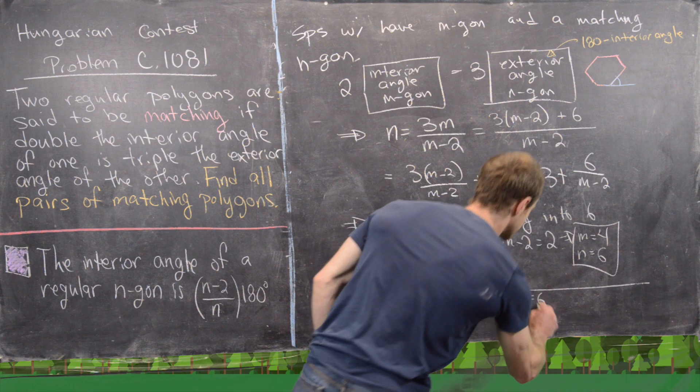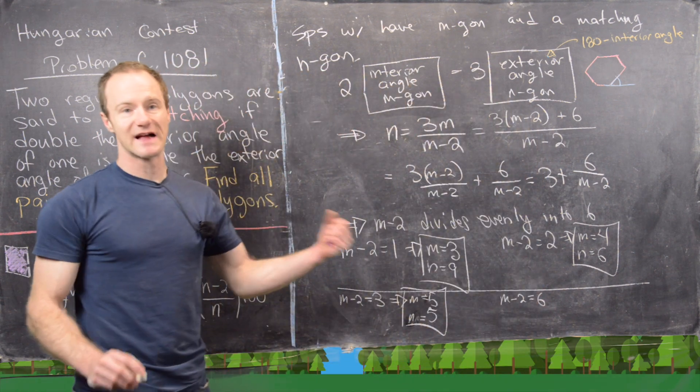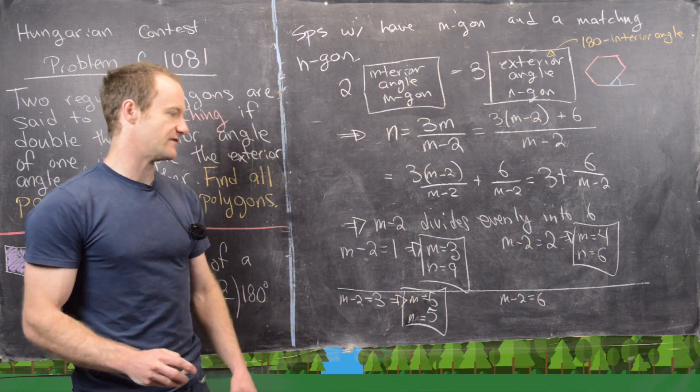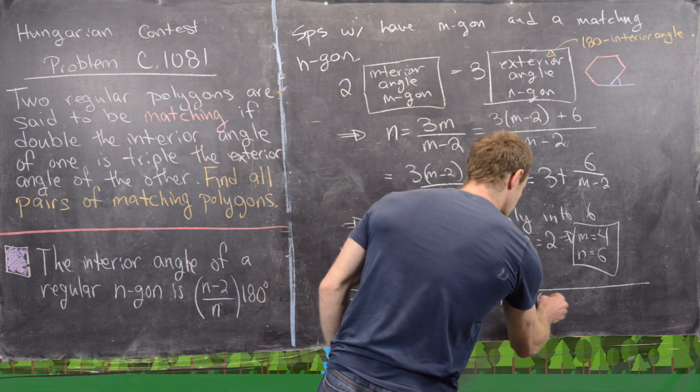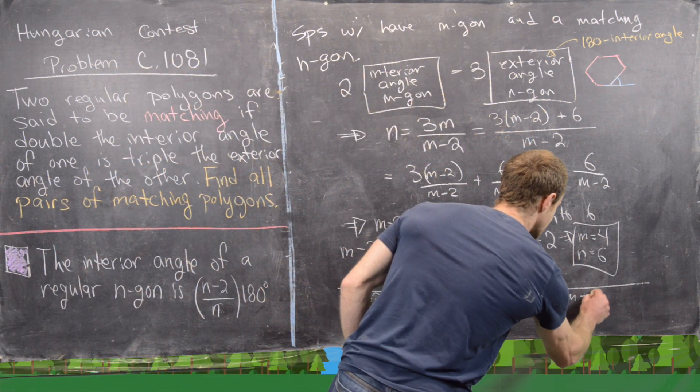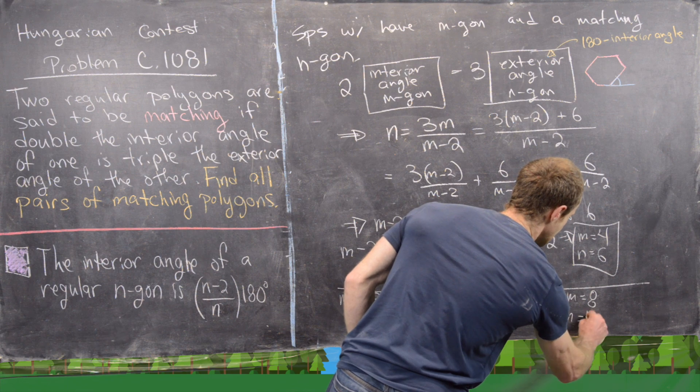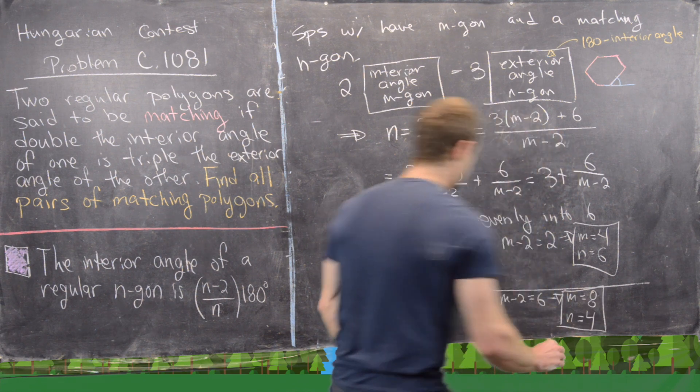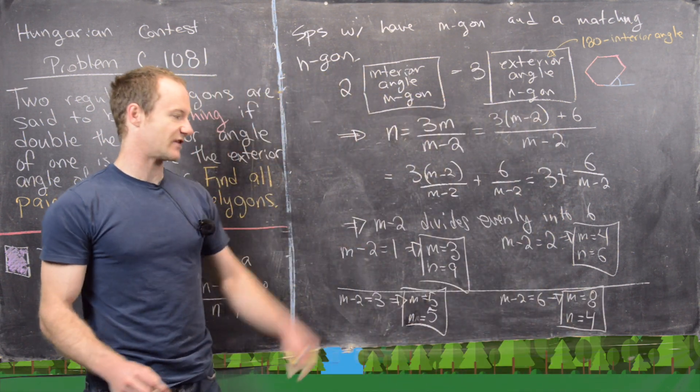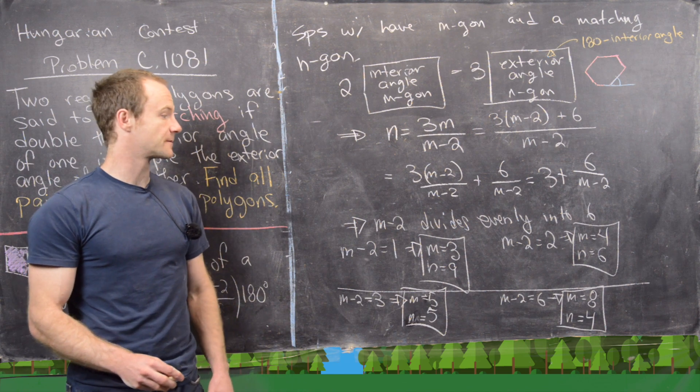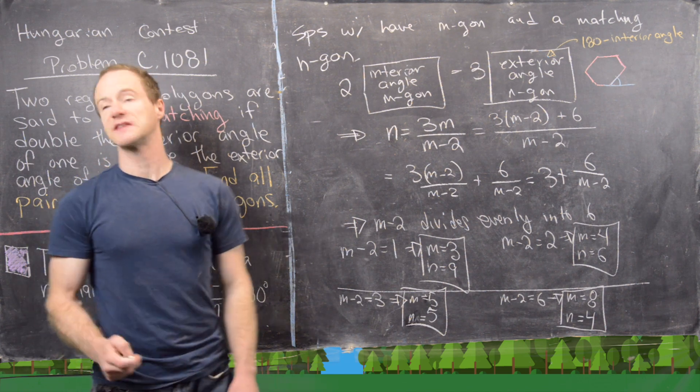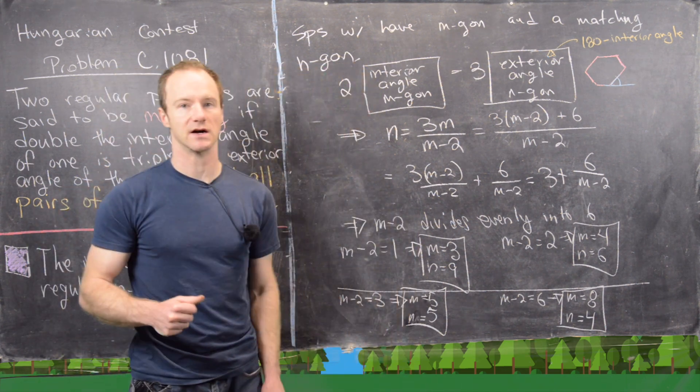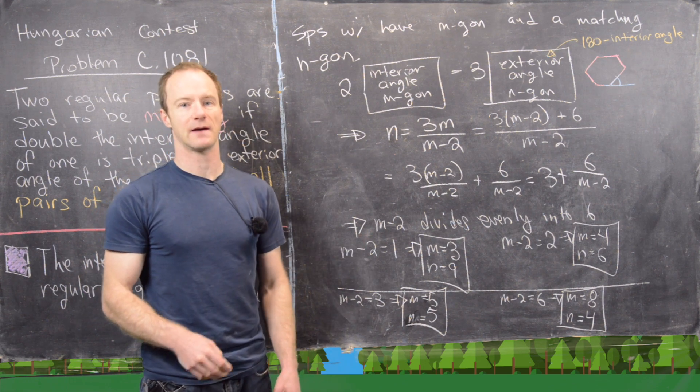And then finally, we have m-2 equals 6. So that's the largest number that can divide evenly into 6. But that is going to give us m equals 8. But then you can check that n equals 4. So our last possibility is having an octagon and a square. And these represent all the possibilities for these matching polygons.